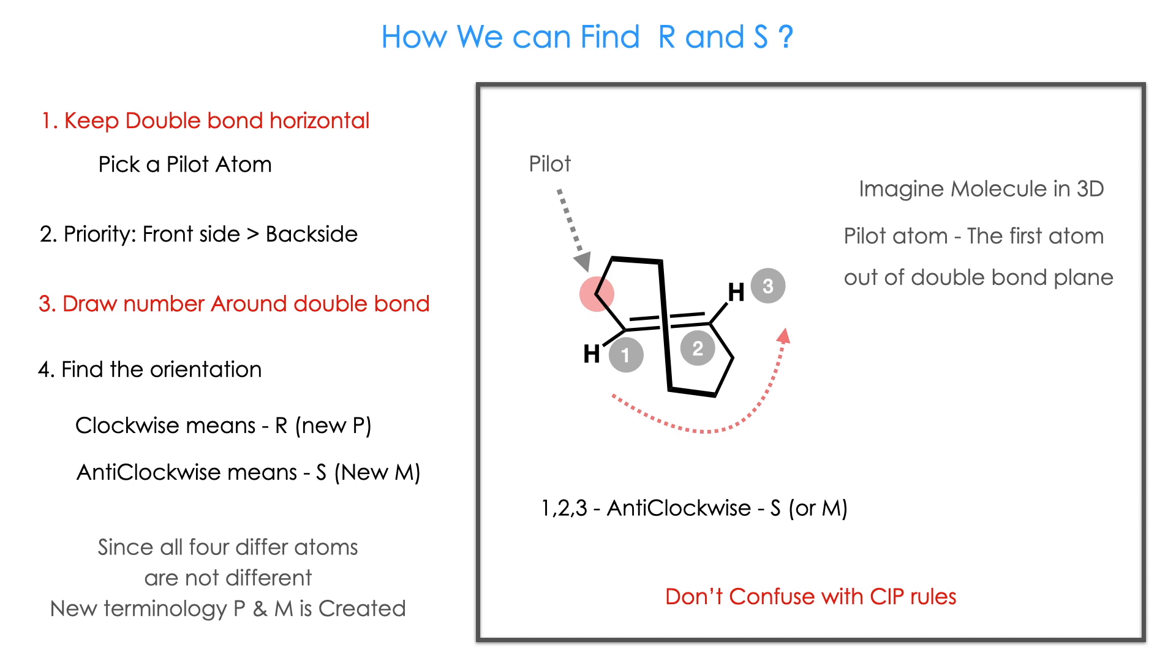Here priority of front side is greater than back side, so choose it carefully. Then draw the number around the double bond. Then find the orientation. Clockwise means R, new name is P. Anti-clockwise means S, new name is M. Since all four atoms are not different, we have new terminology P and M.